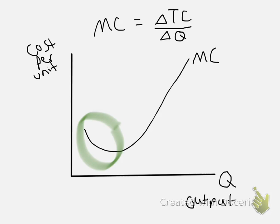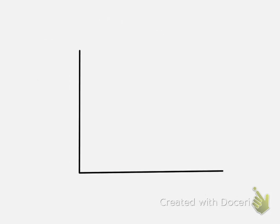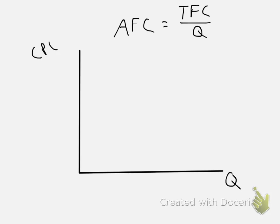Now let's move on to the next one. The next curve we face is the average fixed cost, and the formula for that is equal to the total fixed cost divided by output. So we will graph it. I'm going to label our axes the same — this is the quantity or output axis, and on the y-axis we have cost per unit, which I'm going to abbreviate CPU.